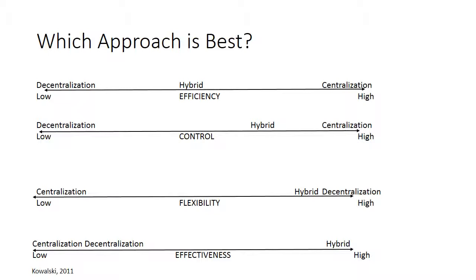Which approach is best? To consider which is best for your situation, you need to think about four different types of factors, represented by the capital letters in the middle of each line: Efficiency, Control, Flexibility, and Effectiveness.